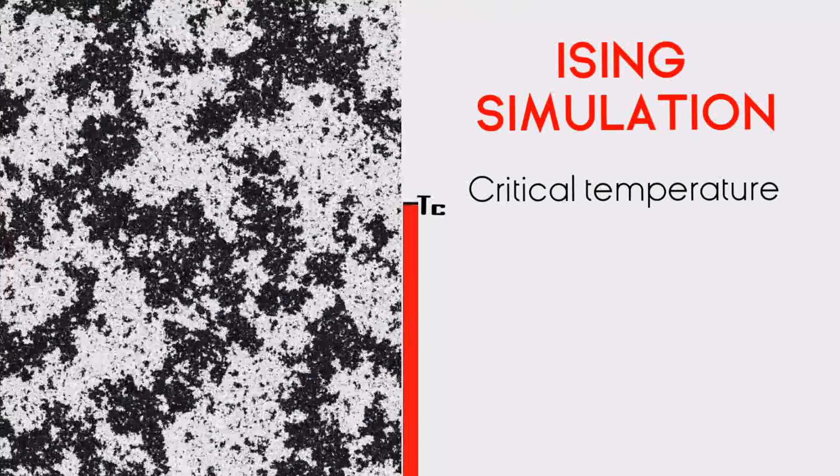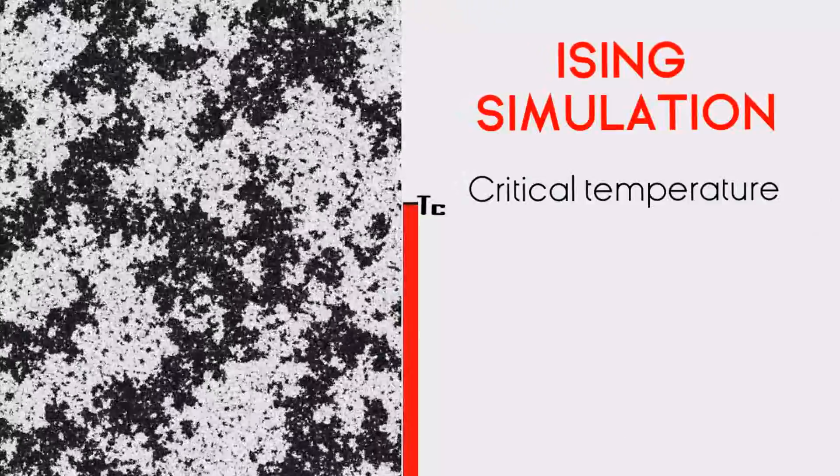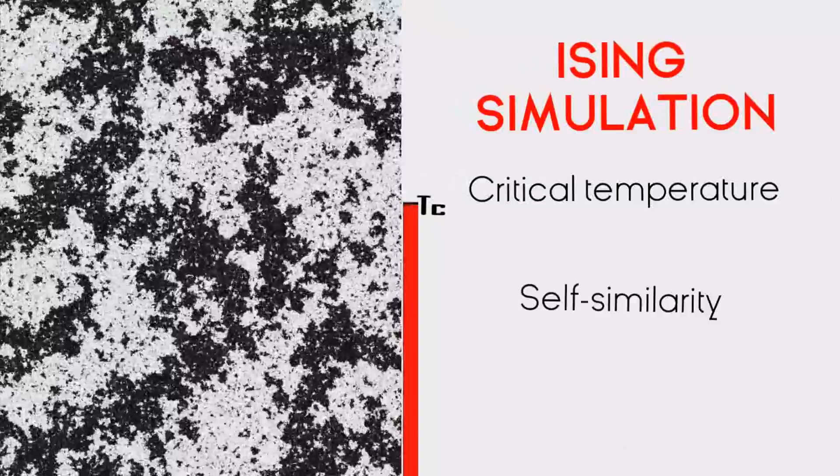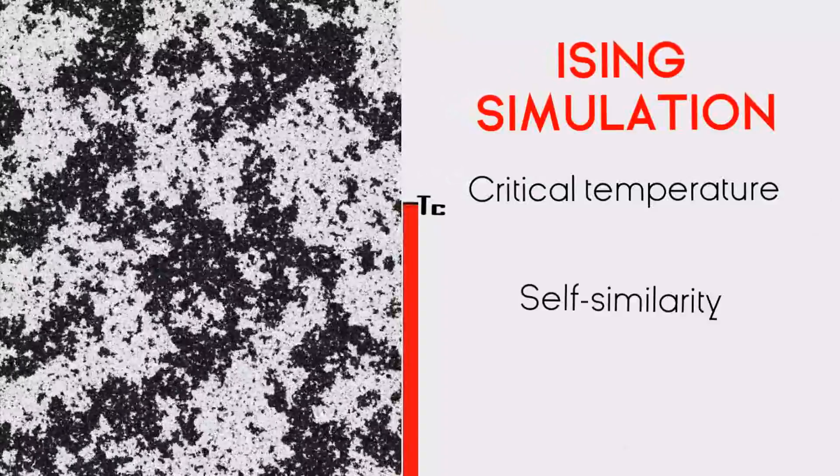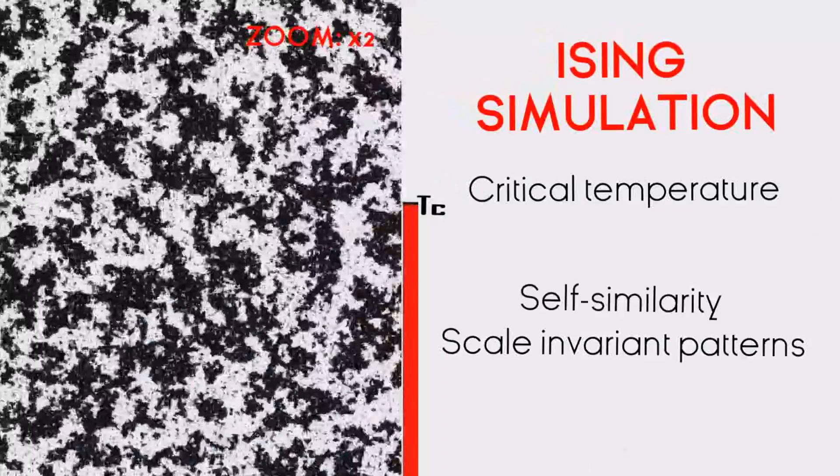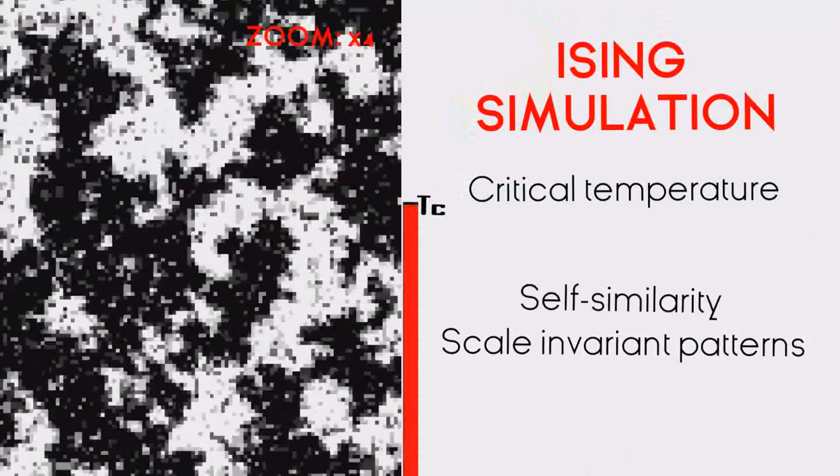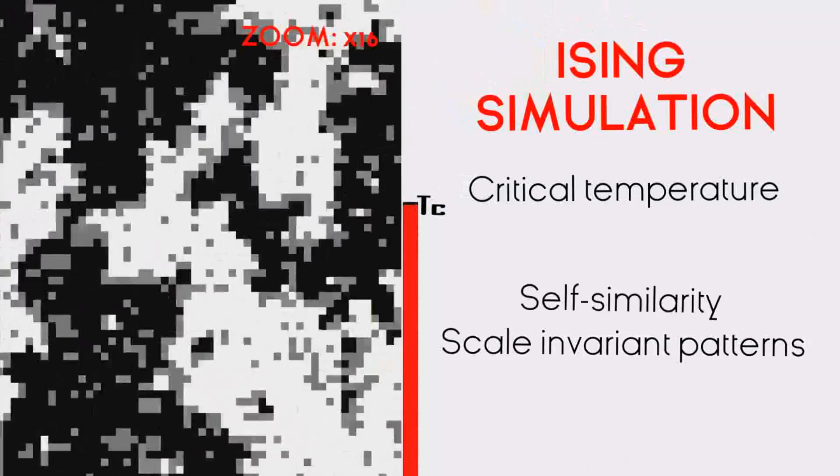Now, let's focus on the critical temperature. What happens at the phase transition? The answer is self-similarity. Semi-stable patterns emerge, which are also called scale invariant, meaning that no matter how many times we zoom in or out, our system's behavior will have the same structure. Cool, isn't it? This is fractal behavior.